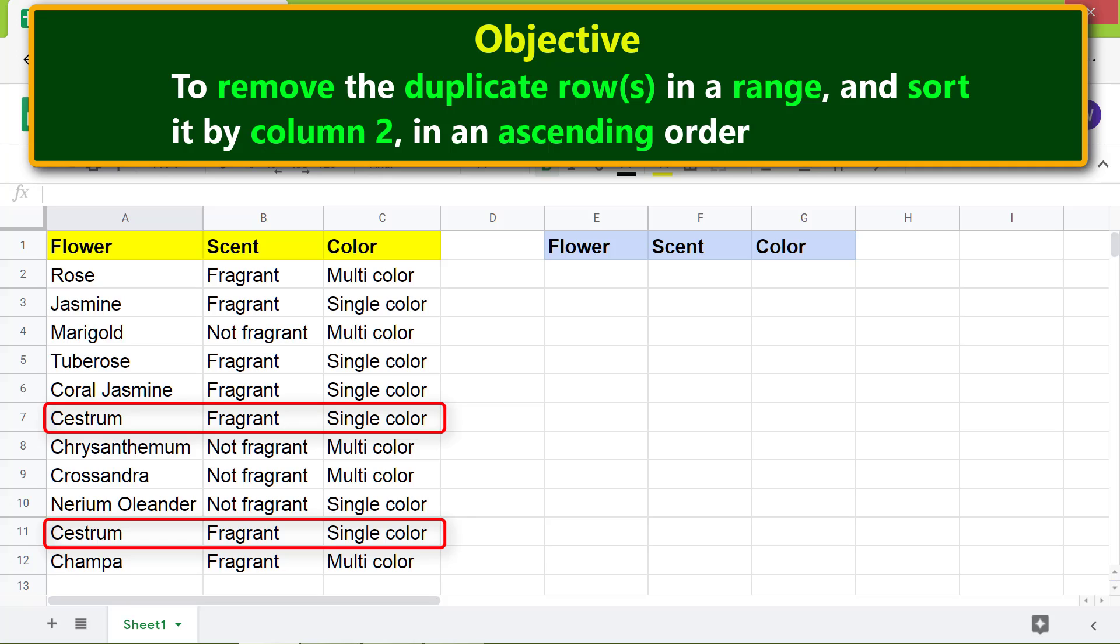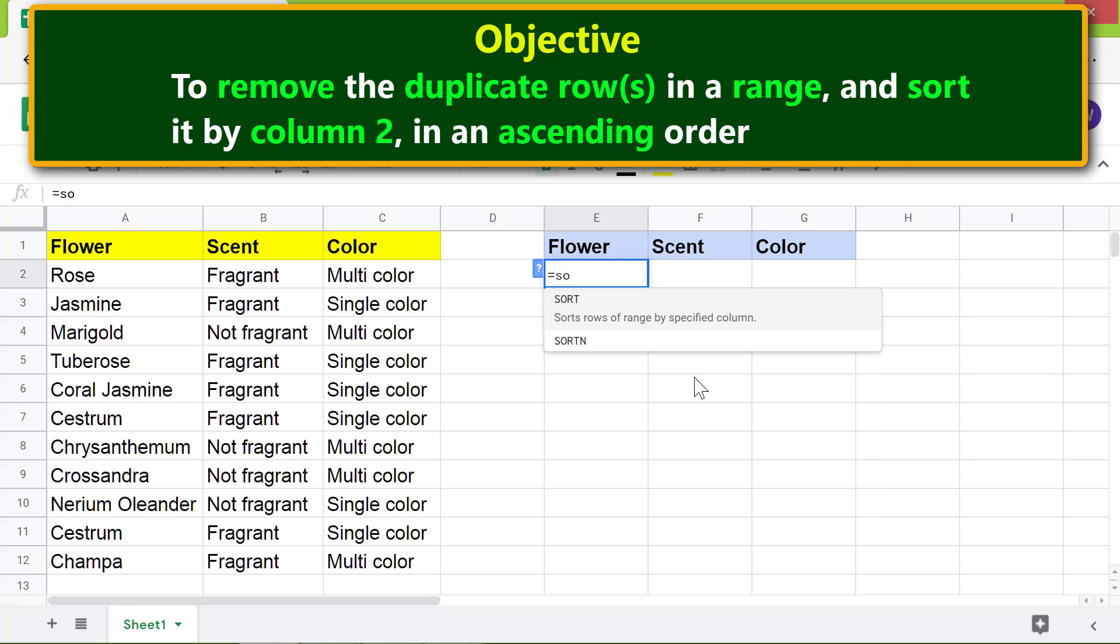All right, we are all set to type the SORT-UNIQUE combo function formula in this cell. First, type equal to S-O, select SORT. For range, let's insert the UNIQUE function because its output is a range, and SORT also requires a range as its first attribute.